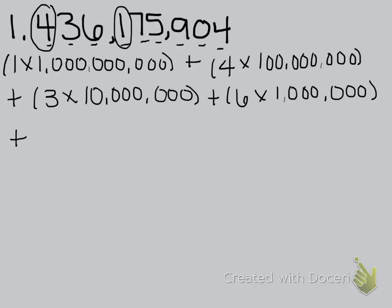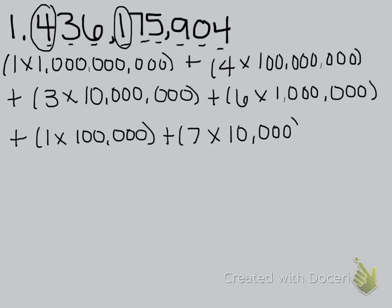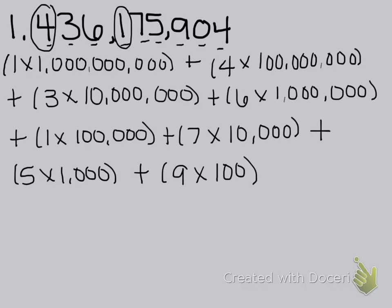Plus the 1 is in the 100 thousands place, so 1 times 100 thousand. Plus 7 is in the 10 thousands place, so 7 times 10 thousand. Plus 5 times 1 thousand. Plus 9 times 100. We're not going to put anything for the zero since it has a value of zero. So plus 4 is in the ones place, so times 1. That is how we write the number in expanded form using multiplication and parentheses.